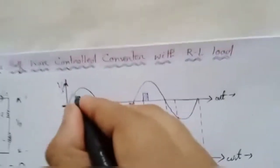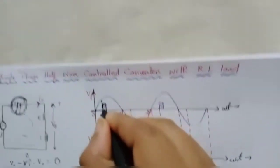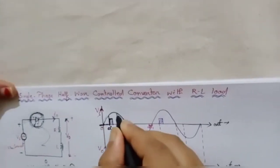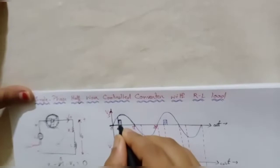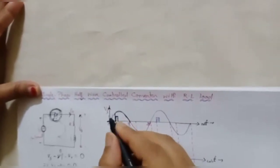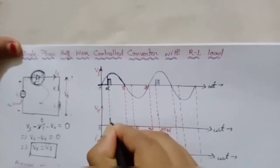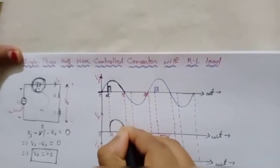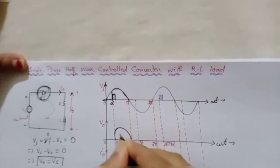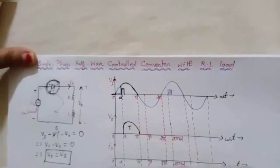So the source voltage appears across the load when we turn on the thyristor. At firing angle alpha we provide the gate pulse, so from alpha to pi this portion of the supply voltage appears across the output. This is the output voltage waveform when the thyristor is turned on.